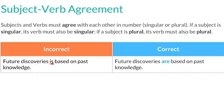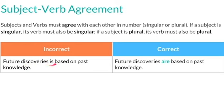Here's the incorrect sentence: 'Future discoveries is based on past knowledge.' This is wrong because the verb 'is' does not agree with the subject 'discoveries'. Notice that the subject 'discoveries' is plural, whereas the verb 'is' is singular. To correct that, we write: 'Future discoveries are based on past knowledge.' The 'is' has to be changed to 'are' because 'discoveries' is plural.